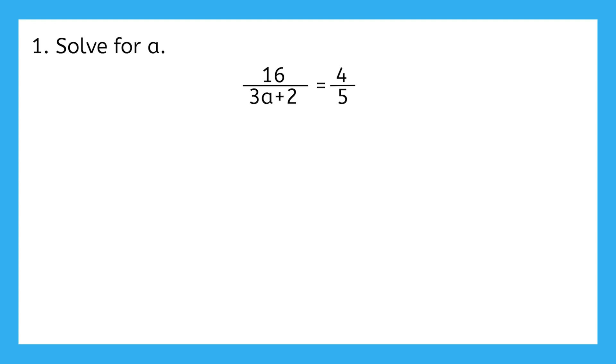Just like we did with x in my bread problem, I'm going to multiply both sides by this whole thing, 3a plus 2. Notice that I put this expression in parentheses on both sides to show that the whole thing is being multiplied. If we look at the left side, we know that if 16 is being divided by 3a plus 2, then multiplying by 3a plus 2 should cancel it out.